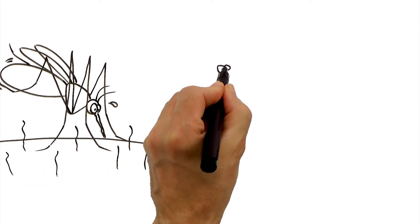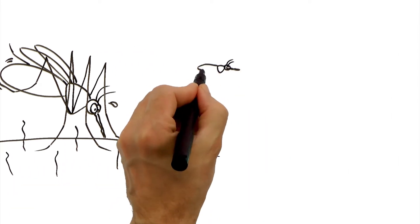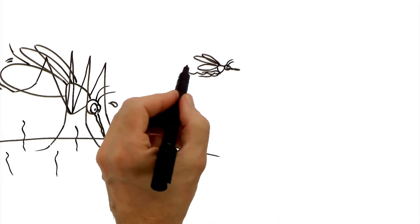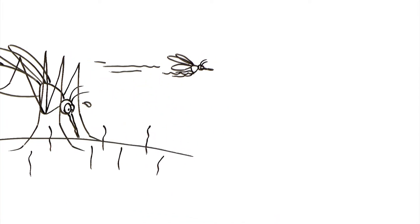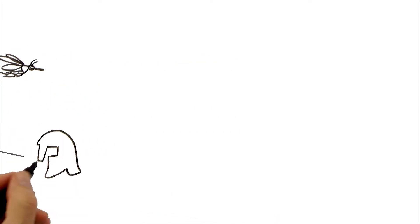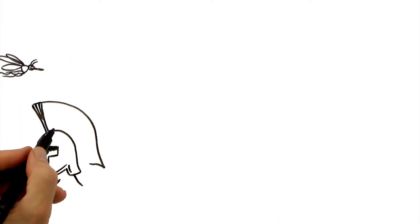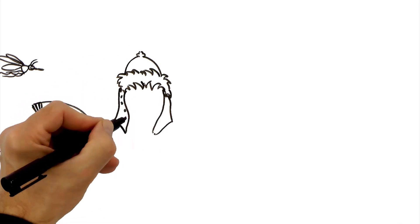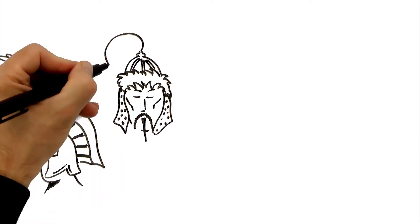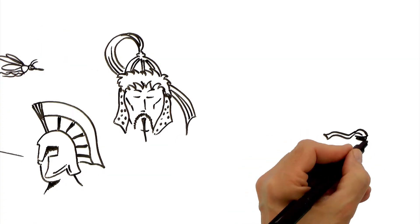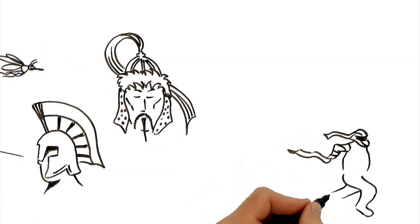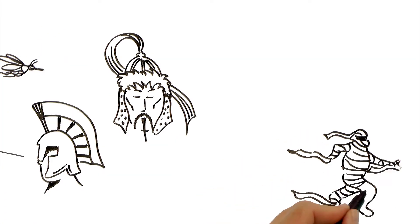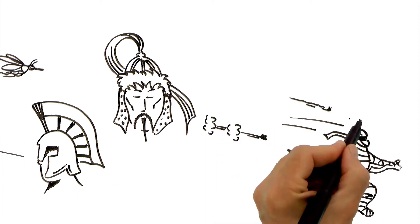Malaria can infect anyone — it doesn't matter who you are. For example, it's thought that Alexander the Great, Genghis Khan, founder of the Mongol Empire, and Tutankhamun, the boy king, were some of its more famous victims.